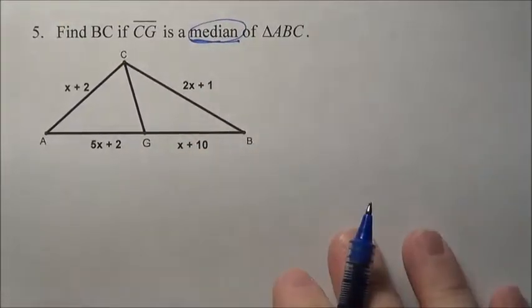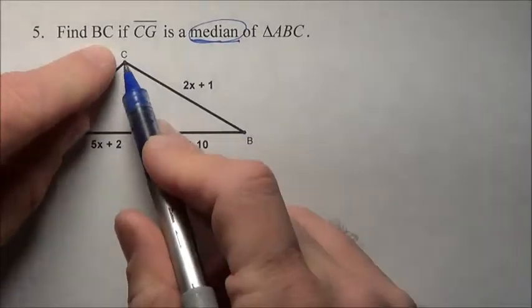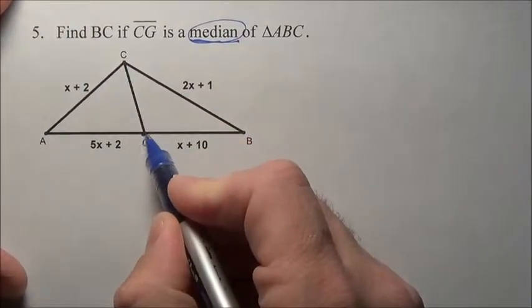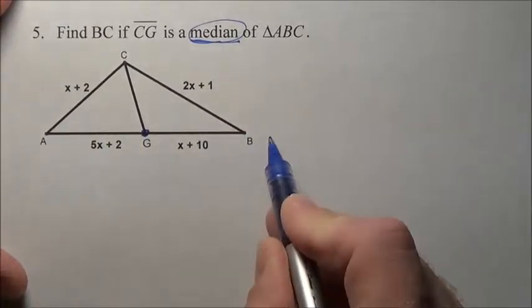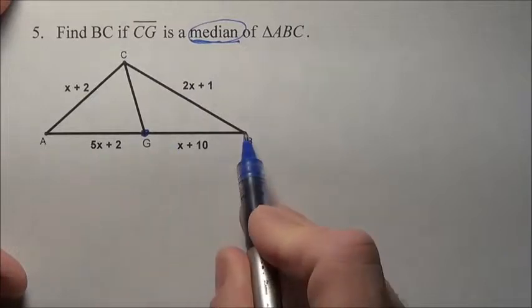Now what does it mean a median? A median means it's in the middle. If CG is hitting right in the middle, this line segment is hitting this guy right here in the middle of his line. So in other words, CG is bisecting line segment AB.